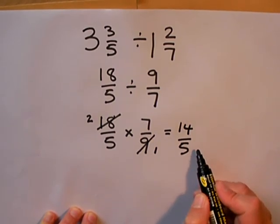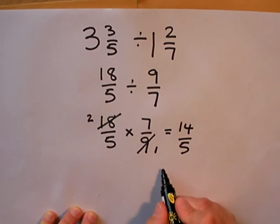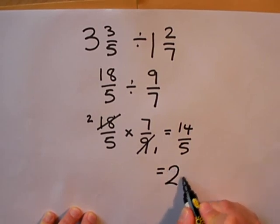Remember, 5/5 is 1 whole one, 10/5 is 2 whole ones. So I've got enough to make 2 whole ones and 4/5 left over.